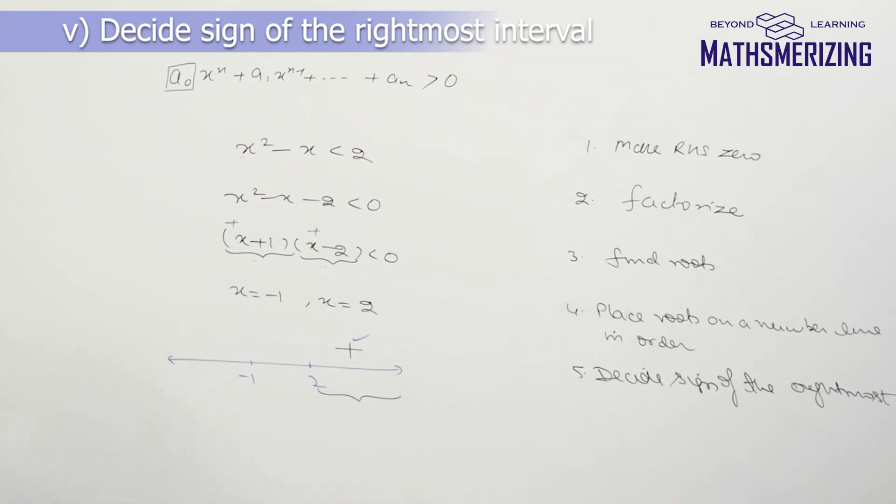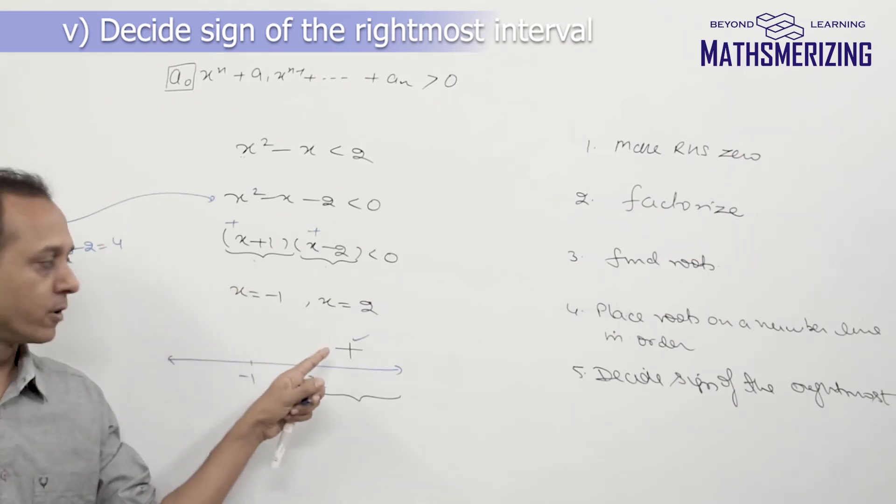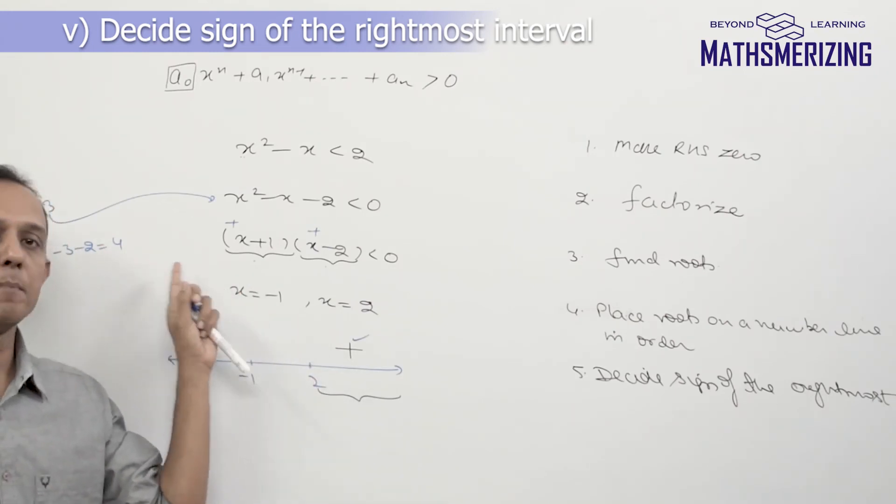The third method can be just take any number between 2 and infinity and put it in the inequality. So if I take any number, maybe I'll take 3. So 3 belongs to the interval. If I take x = 3 and put it there I'll get 9 - 3 - 2 which is plus 4. So if it is positive I'll put a plus sign and if it is negative I'll put a minus sign.